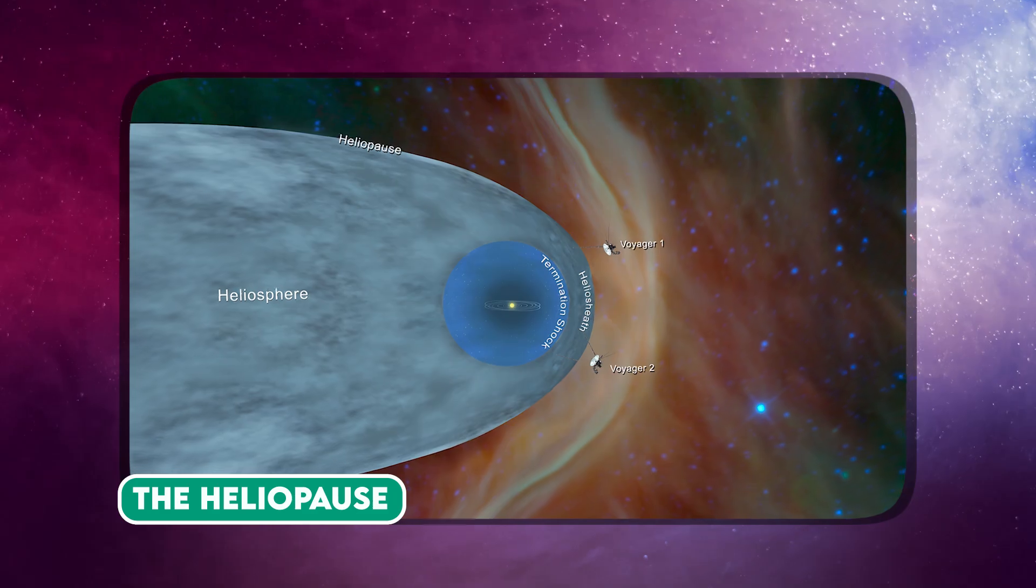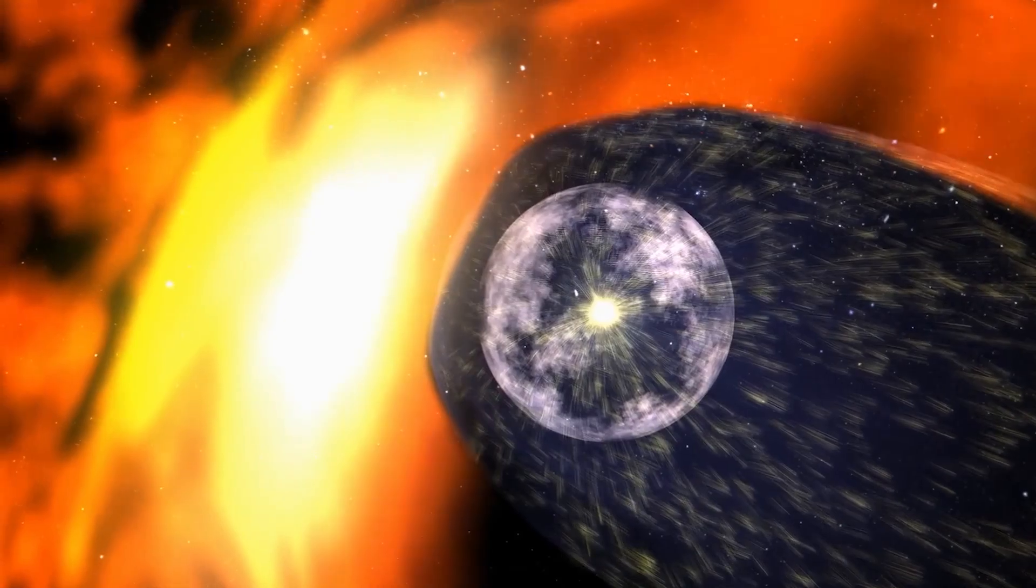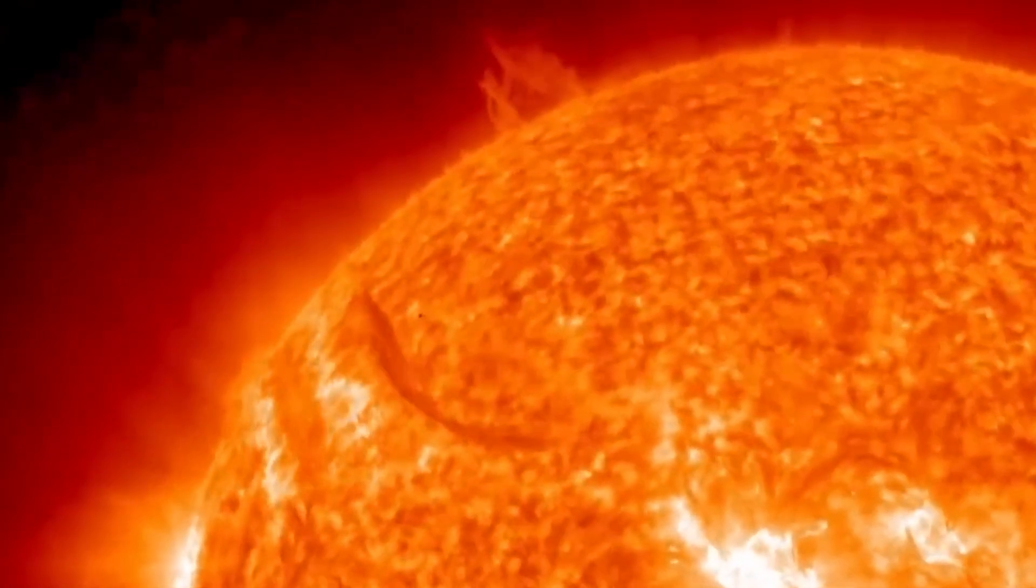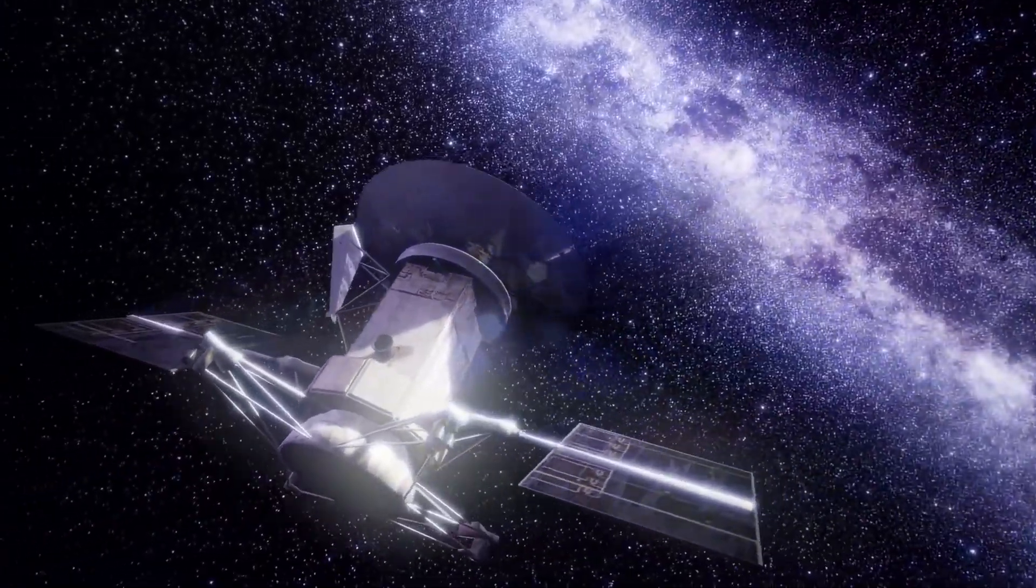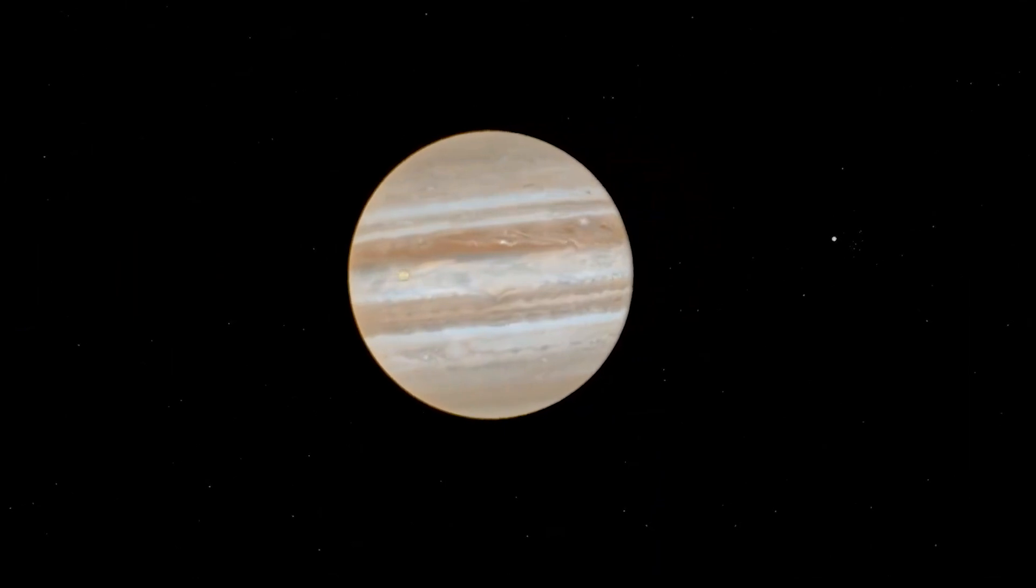Embarking on their interstellar odyssey, the Voyager probes encounter a pivotal milestone, the Heliopause, marking the boundary between our Sun's influence and the expansive interstellar realm. Initially enshrouded in mystery, early estimates posited its location near Jupiter.